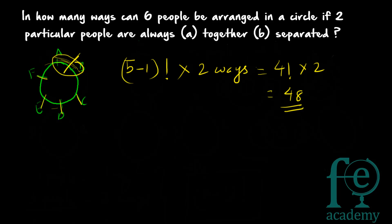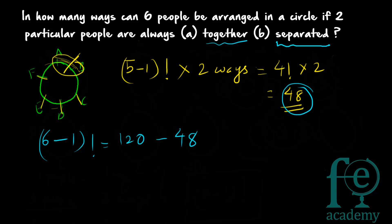Part B: arrange 6 people so that 2 people are always separated. The total number of ways to arrange 6 people in a circle is (6−1)! = 5! = 120. The number of ways where 2 people are always together is 48 (from Part A). So the number of ways where 2 people are always separated = 120 − 48 = 72 ways.